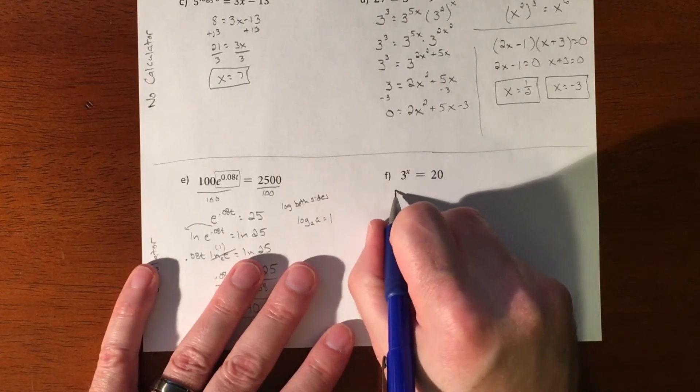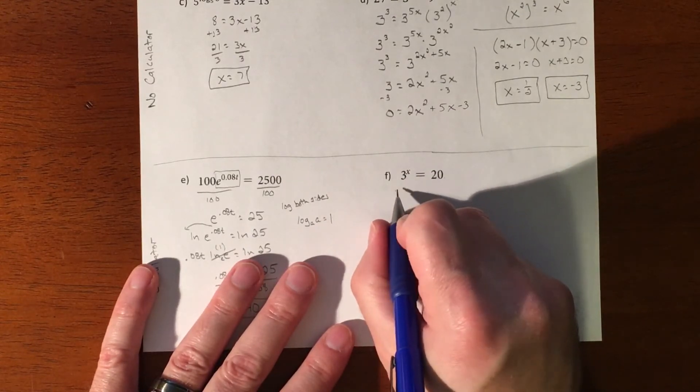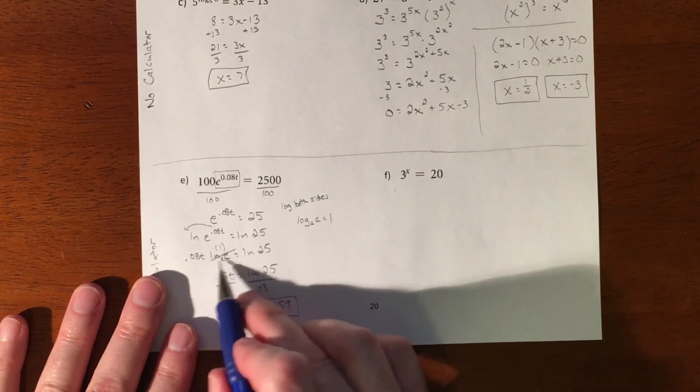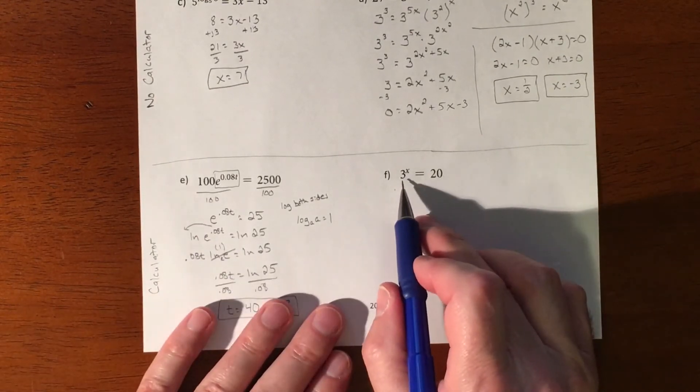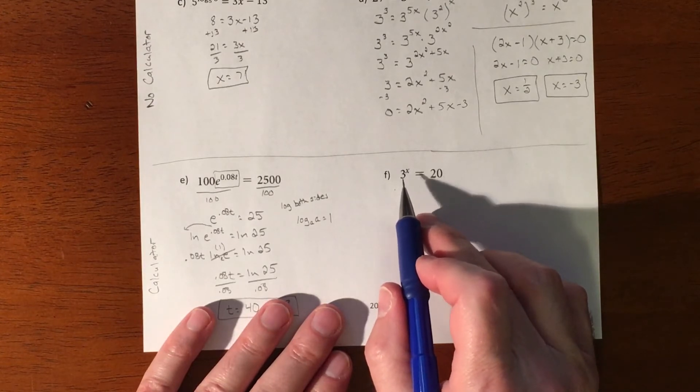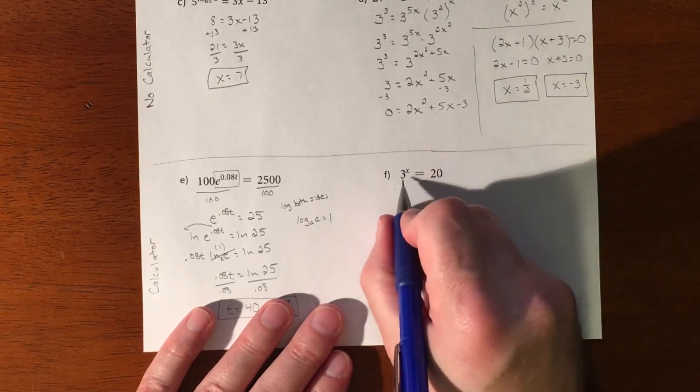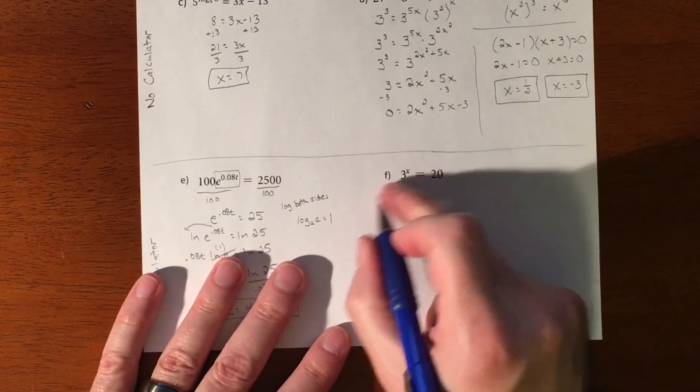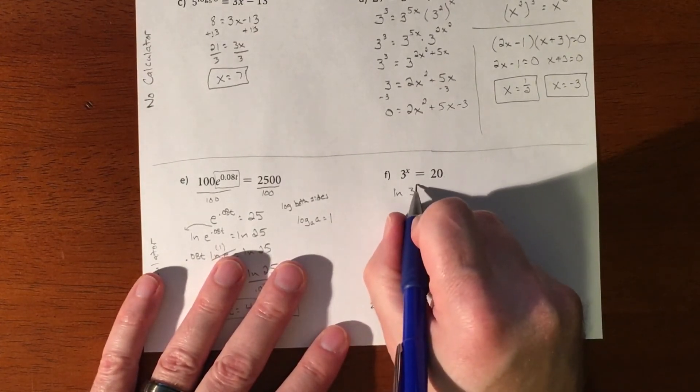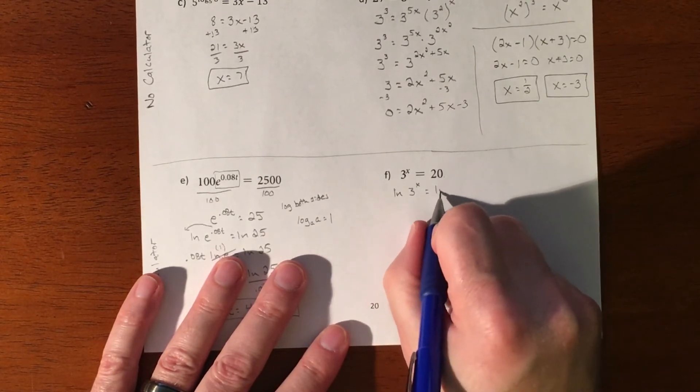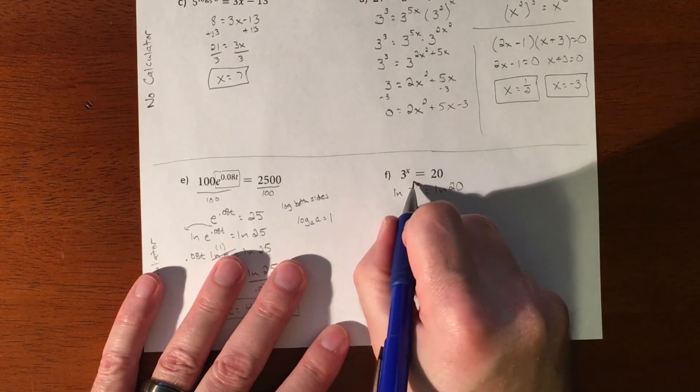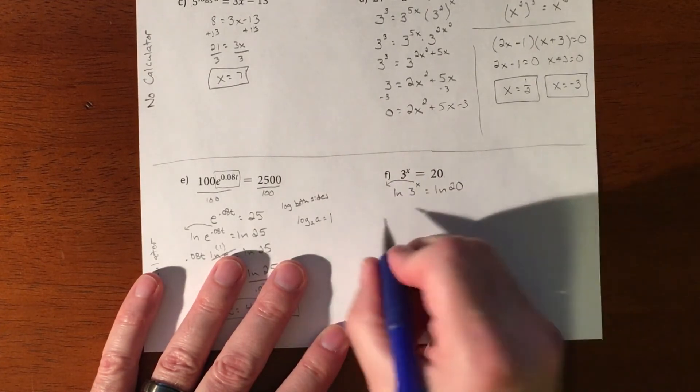So same thing is going to happen on the next two examples here. We're going to log both sides. Now it doesn't matter if you log or natural log. I chose natural log here specifically because I knew this was going to turn into one, but my calculator only has a natural log. So a log base E and a log base 10, not a log base three. So if I just want to do this real quick, I'm just going to natural log both sides. So I could log or natural log both sides. It doesn't matter.